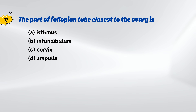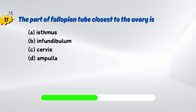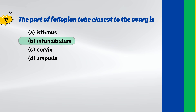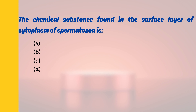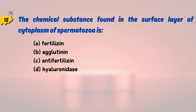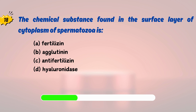The part of fallopian tube closest to the ovary is? The chemical substance found in the surface layer of cytoplasm of spermatozoa is?